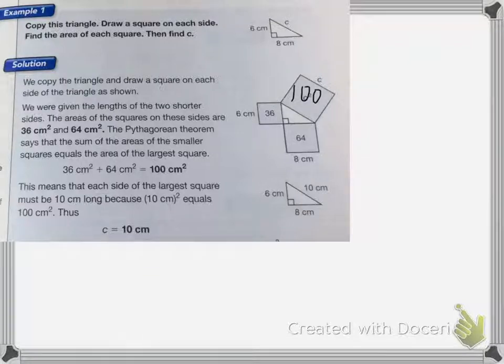Now that means that each side of the largest square must be 10 centimeters long because 10 centimeters squared equals 100 centimeters squared. So side C has to equal 10 centimeters.